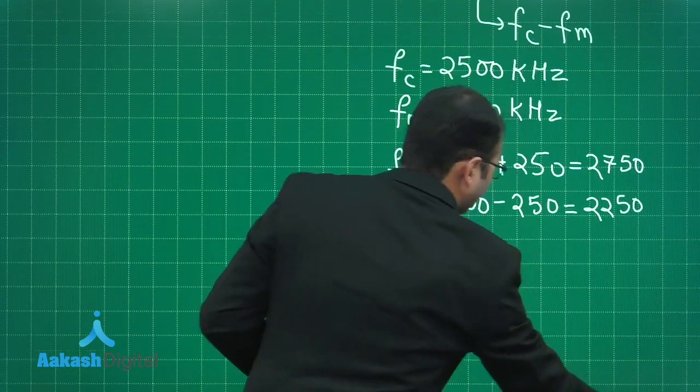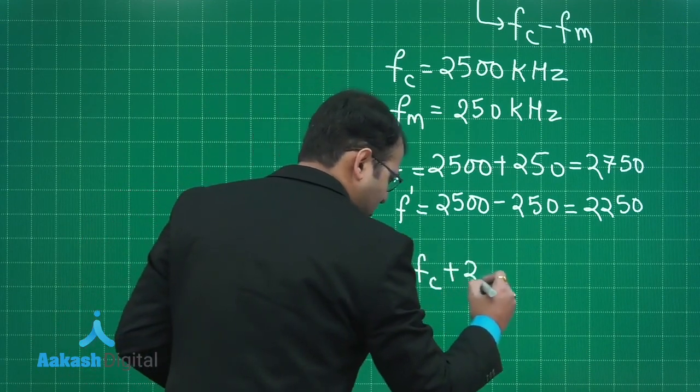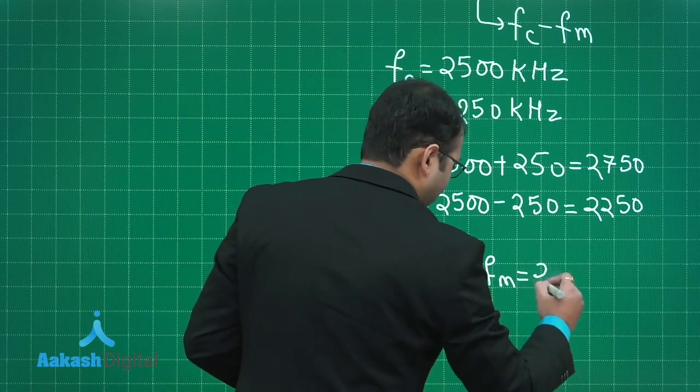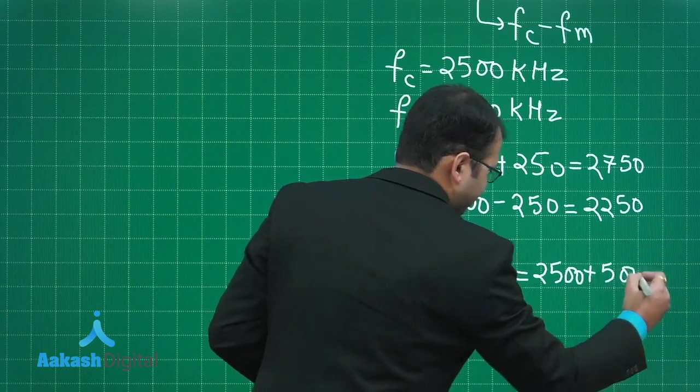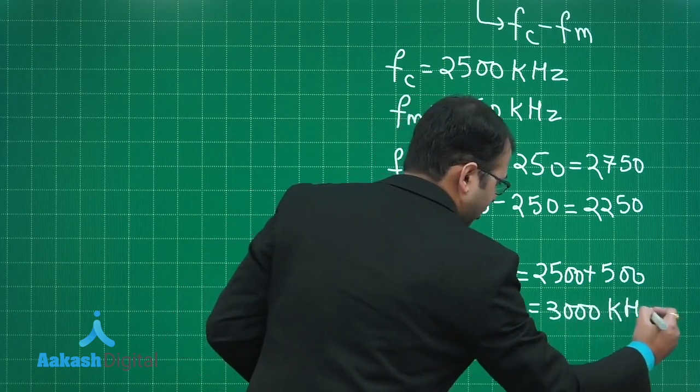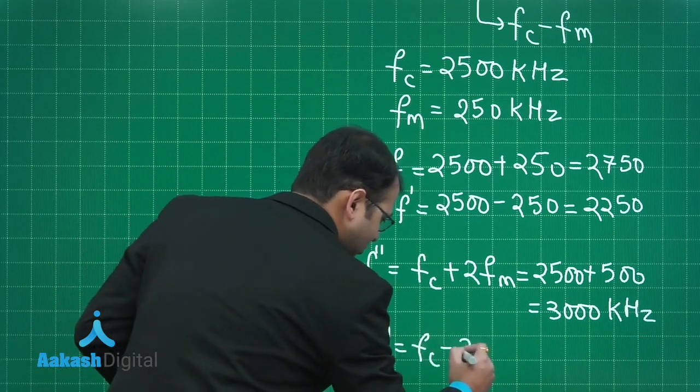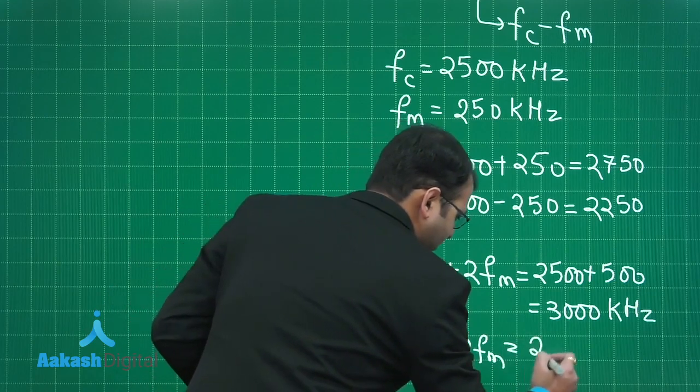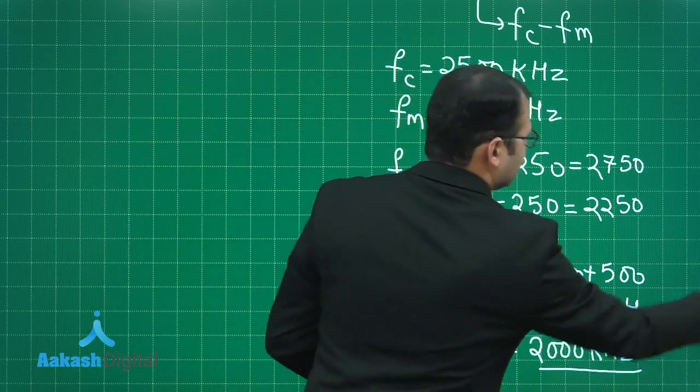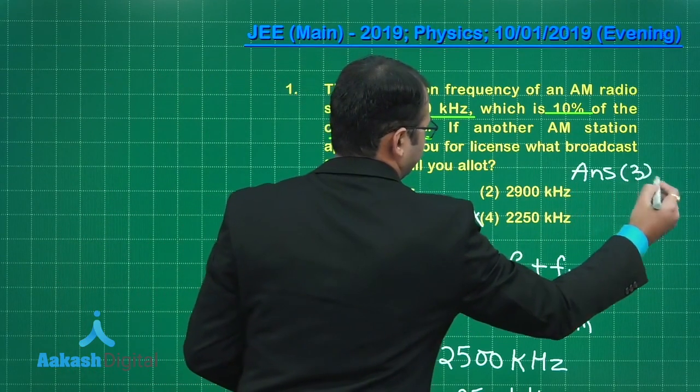For the next set, I will go for F double dash as frequency of carrier wave plus twice of frequency FM. So you will get here as 2500 plus 500, which is 3000 kilohertz, which is not there in the option. The other set which can be given is FC minus 2FM which on calculation would be 2000 kilohertz. And yes, this option is available. Option number three is the correct answer to this question.